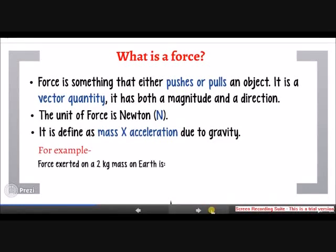For example, force exerted on a 2 kg mass on earth is 9.8 meters per second squared, which is acceleration due to gravity, multiplied by 2 kg. So the answer is 19.6 Newtons.